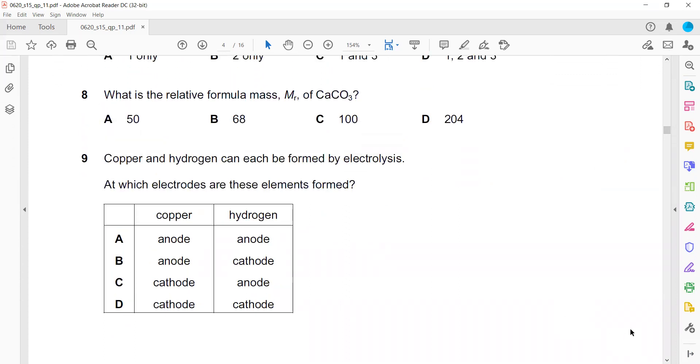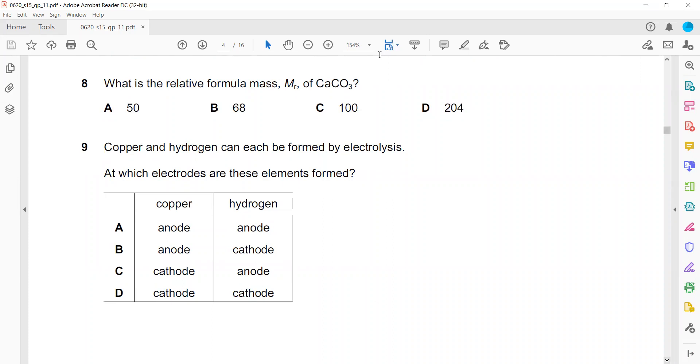What is the relative formula mass of calcium carbonate? Calcium carbonate is CaCO3. What is the mass of calcium? Using the periodic table, it is 40. Mass of carbon is 12. Mass of oxygen is 16 multiplied by 3. When we solve, 16 into 3 is 48, plus 12 is 60, plus 40 equals 100.